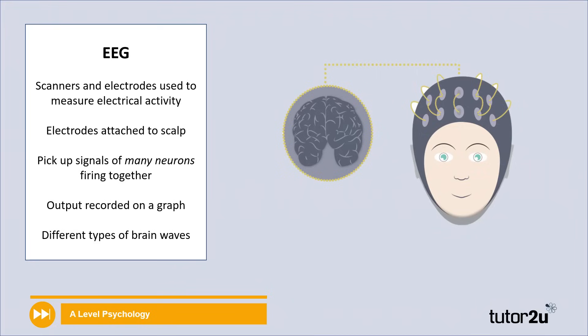Let's take a closer look at EEGs. We can see on the diagram that someone is wearing almost like a hat, but actually it's a device covered in electrodes that attach themselves to the scalp. These electrodes are used to measure any electrical activity coming from the brain — by that we mean the different brain waves. What these electrodes do is pick up any signals of neurons firing together, and it gives us a visual output of what's perhaps happening in the brain, recorded on a graph.